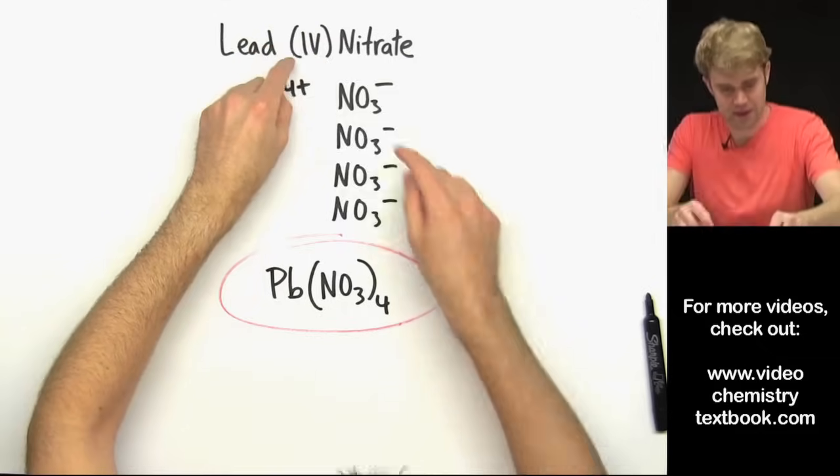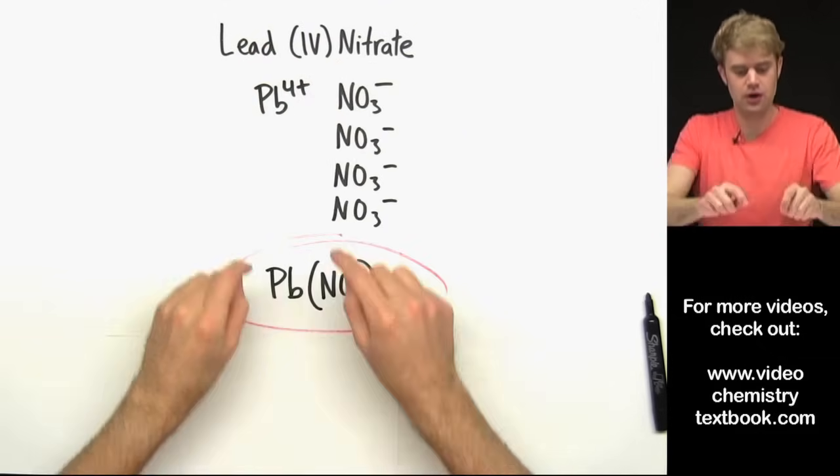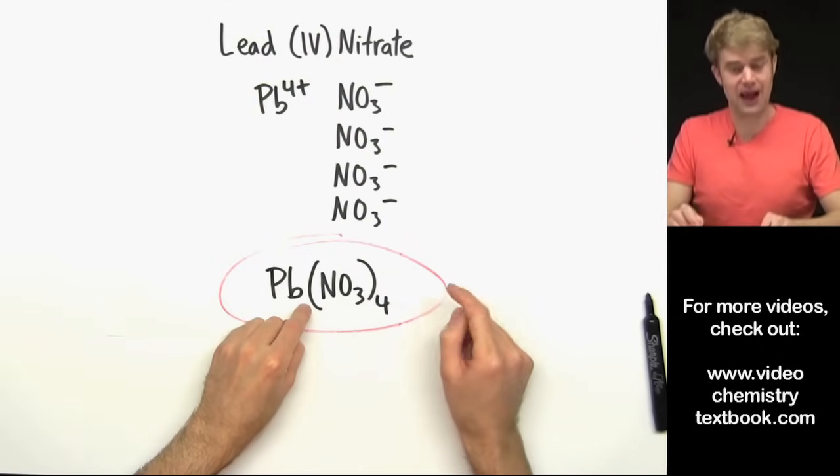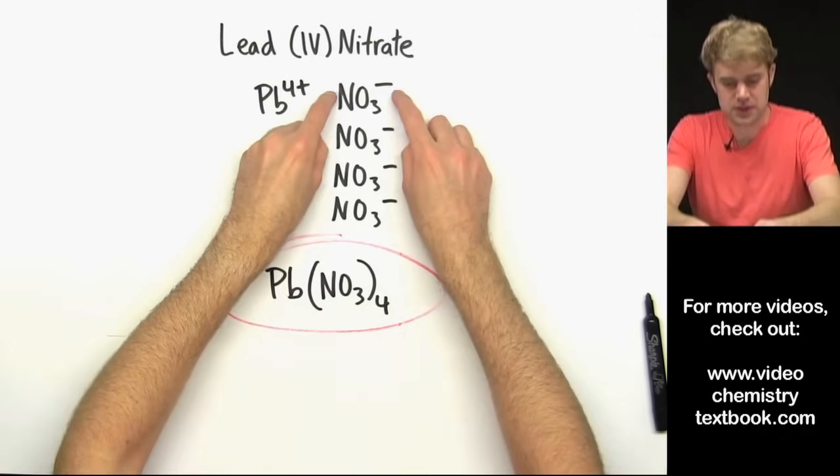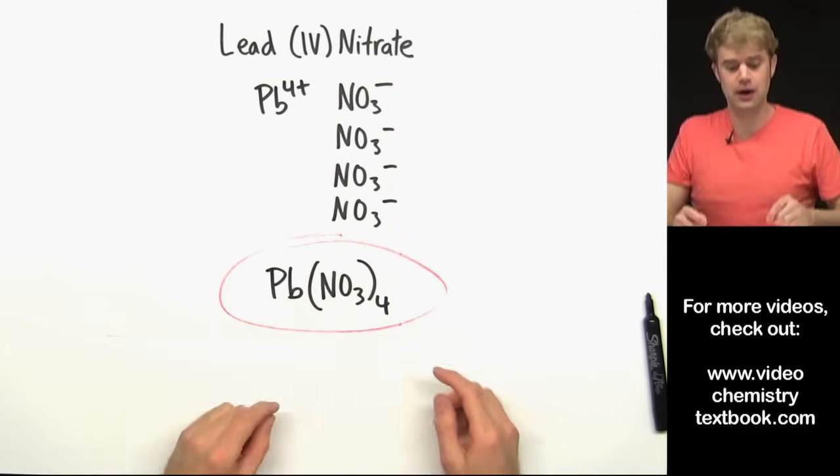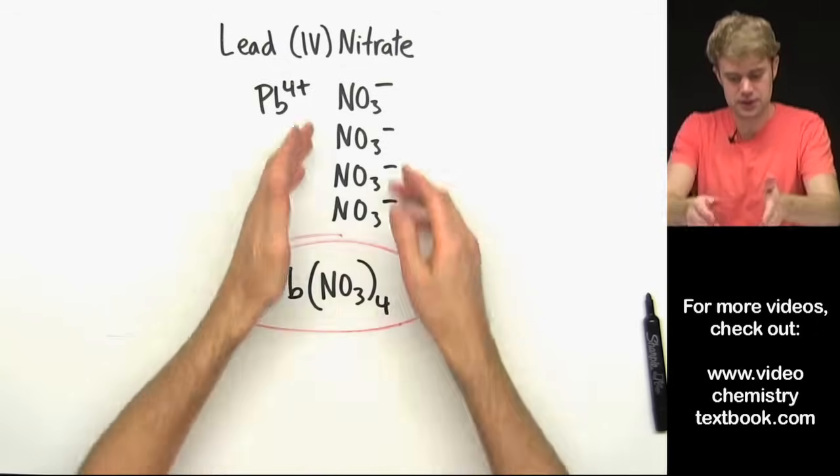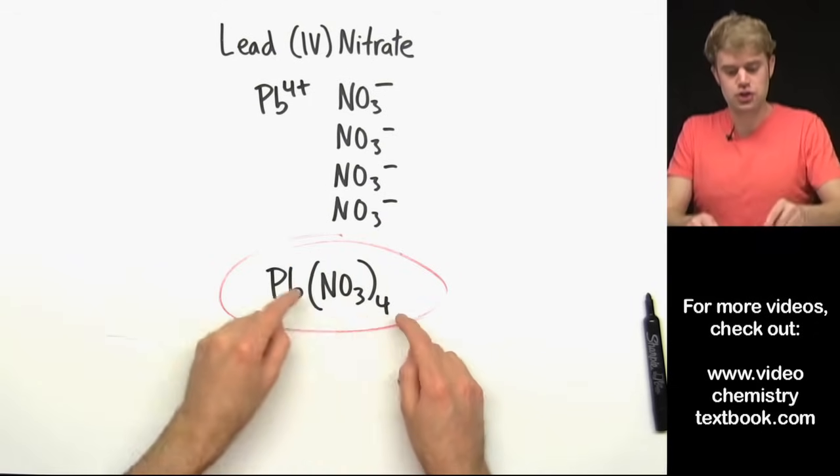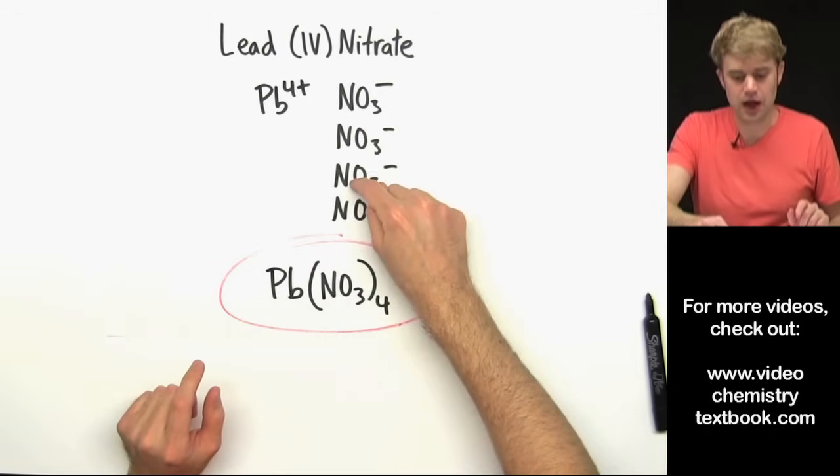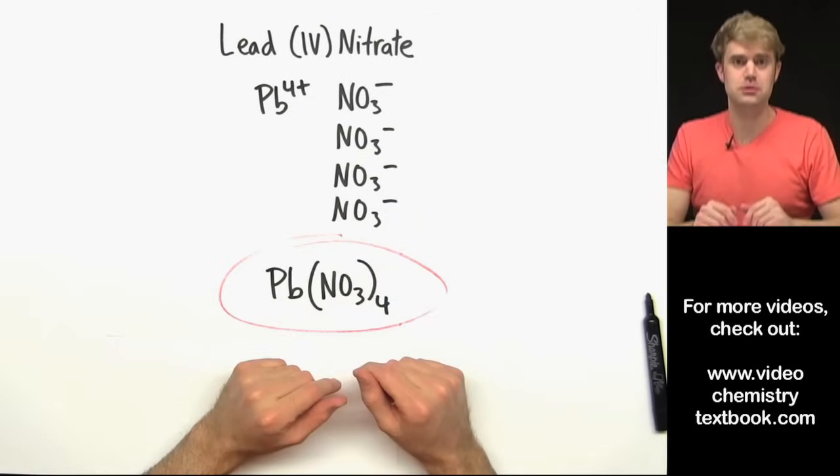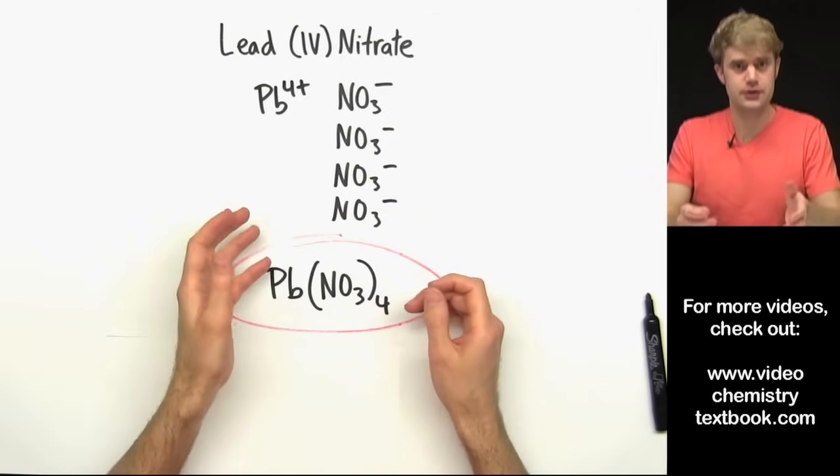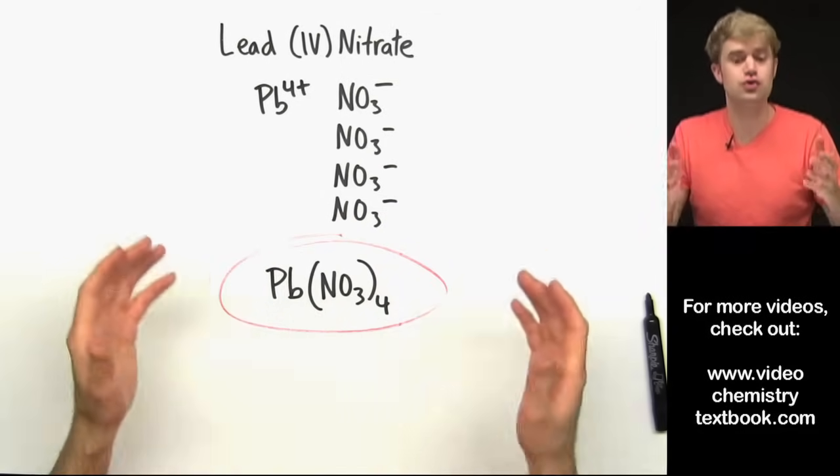So keep in mind, again, this 4 refers to the charge of lead, not to the number that should be after it. And remember that since this is a polyatomic ion, we use these parentheses and then a number outside of it to show that we have 4 of this entire group of atoms. So that's how we write formulas for compounds that contain transition metals.